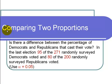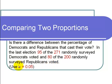This is a video on comparing two proportions. The question asks: is there a difference between the percentage of Democrats and Republicans that cast their vote in the last election? 95 of the 271 randomly surveyed Democrats voted, and 80 of the 200 randomly surveyed Republicans voted. Use a level of significance alpha equals 0.05. Let's start by stating our null and alternative hypotheses.